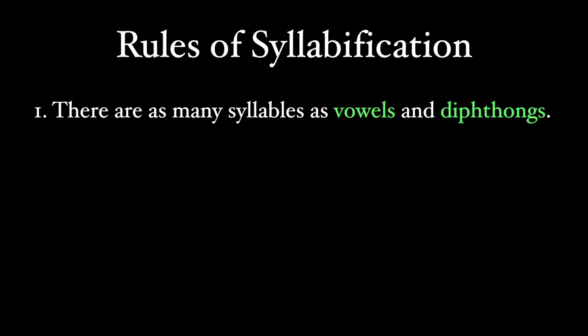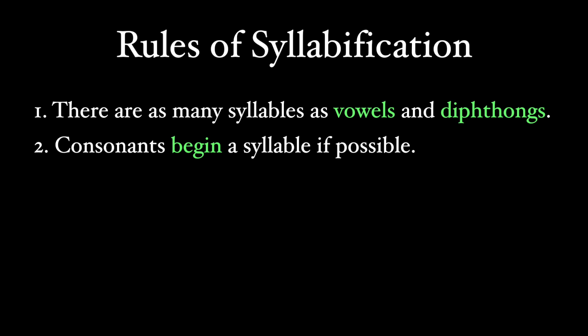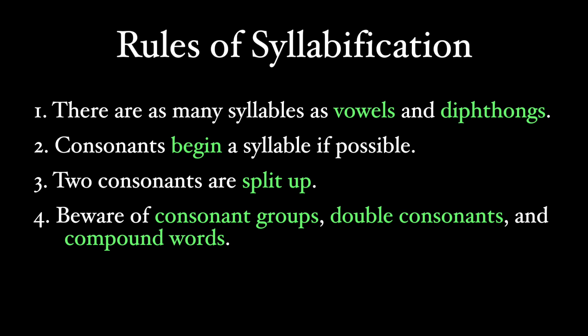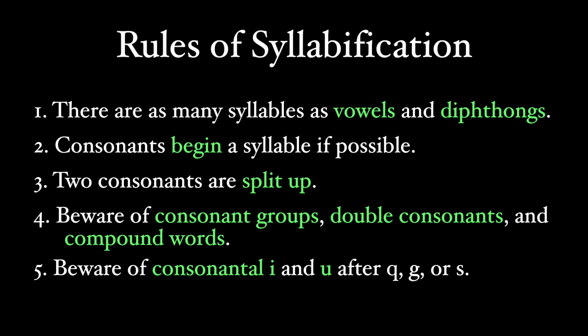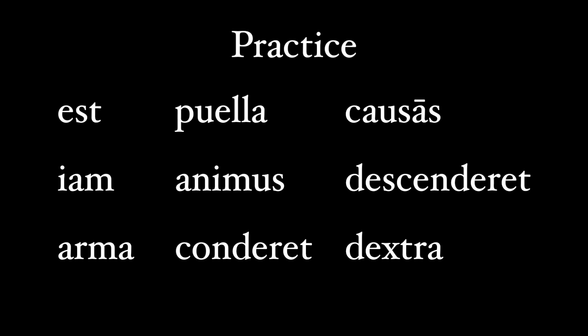A quick review: one, a Latin word has as many syllables as it has vowels and diphthongs. Two, a consonant will begin a syllable if at all possible. Three, in the case of two consonants or double consonants - like a doubled letter like the double 'l' in 'vella' - the first consonant ends the preceding syllable and the second begins the next. Four, beware of exceptions like consonant groups, especially where the second consonant is an 'l' or an 'r,' and 'x' and 'z' which represent two different consonants - and compound words too. Five, beware of consonantal 'i,' and situations where 'u' is part of a 'q,' 'g,' or 's' combination.